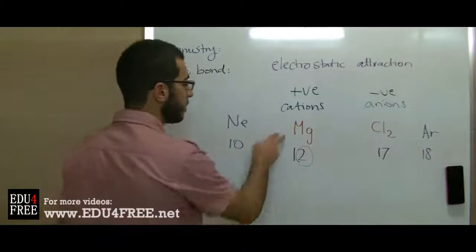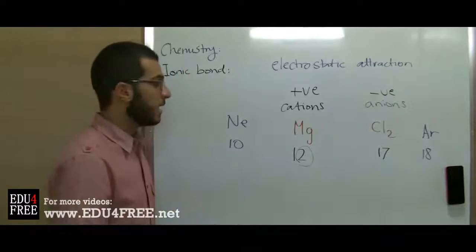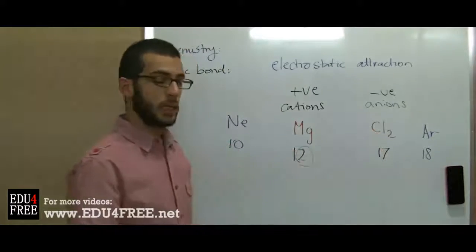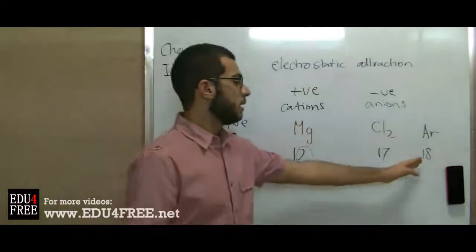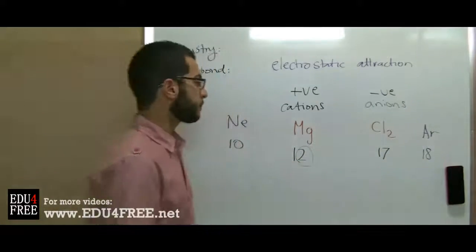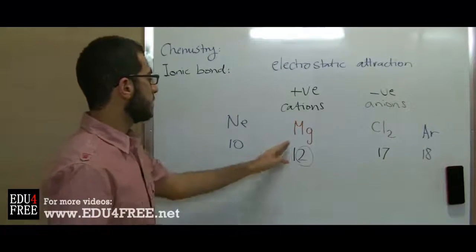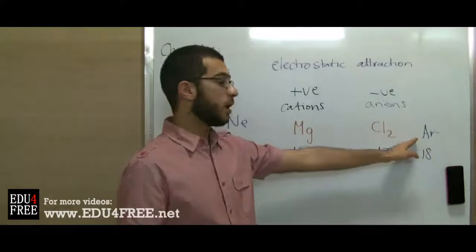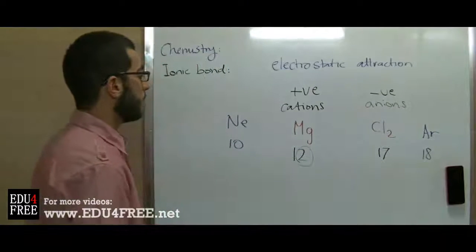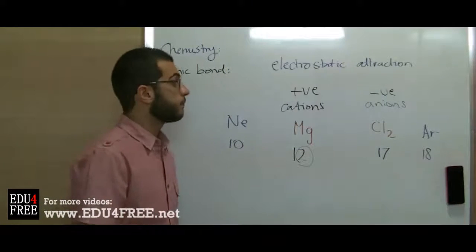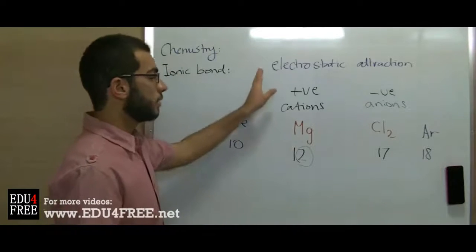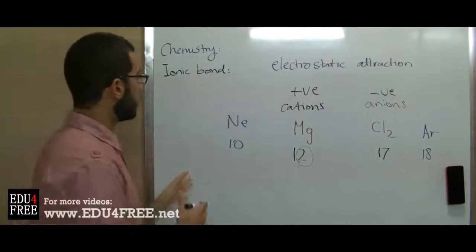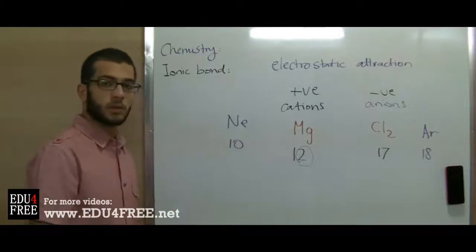Magnesium loses two electrons, and each atom of chlorine gains the one electron it needs in order to reach atomic number 18. As magnesium reaches the state of neon and chlorine reaches the state of argon, they attract each other through electrostatic attraction and form the ionic bond. This is how the ionic bond works.